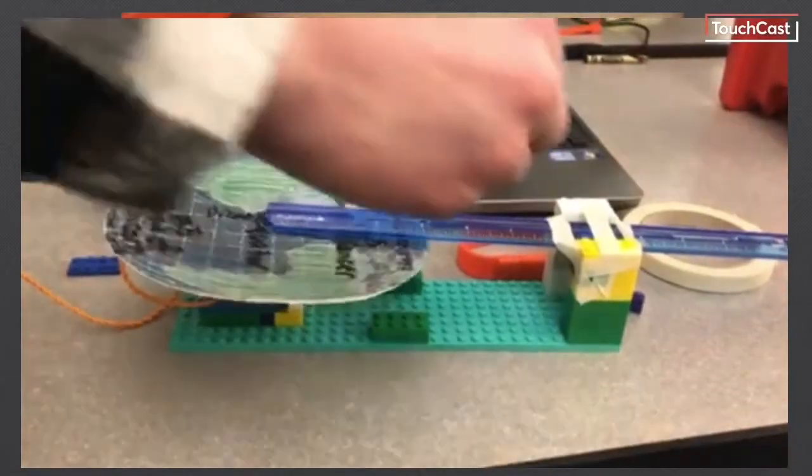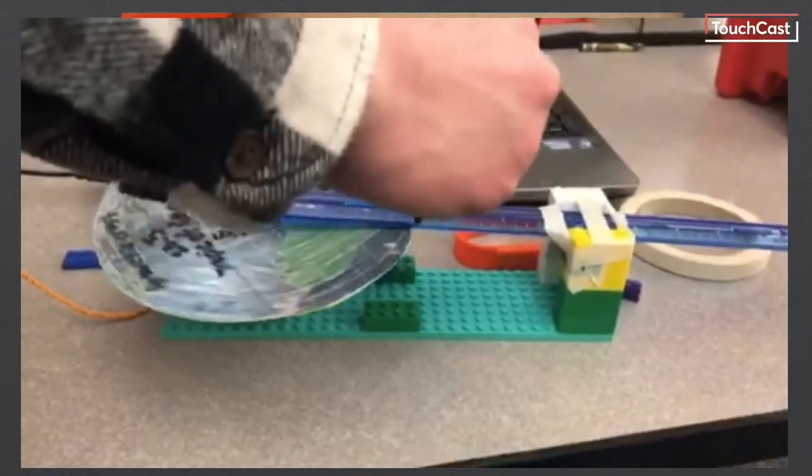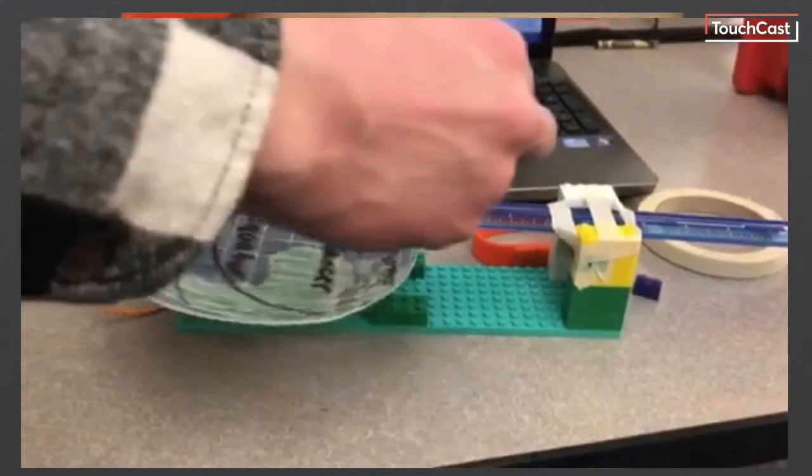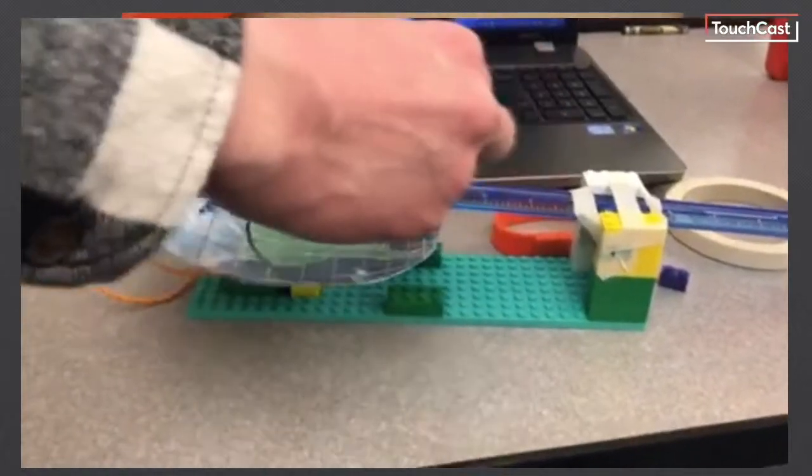To illustrate the Coriolis effect, we hooked up the Hummingbird circuit board to our laptop and hooked a motor to the circuit board. We attached a flat Earth to the motor so it spins when we hit the space bar.